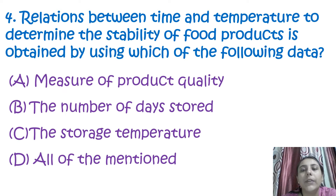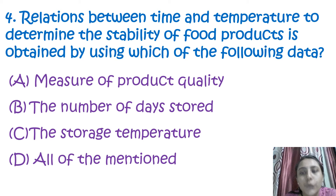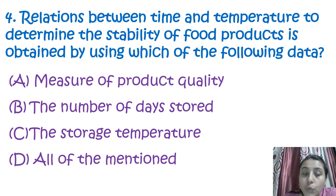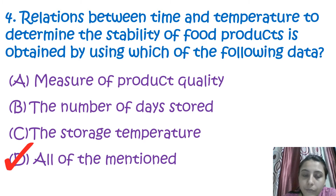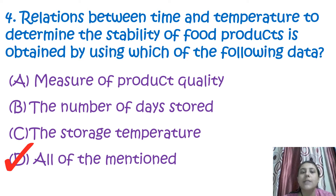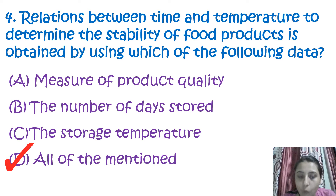The next question is: the relationship between time and temperature to determine the stability of a food product is obtained by using which of the following data? The answer is all of the above — measurement of product quality, the number of days stored, and the storage temperature.